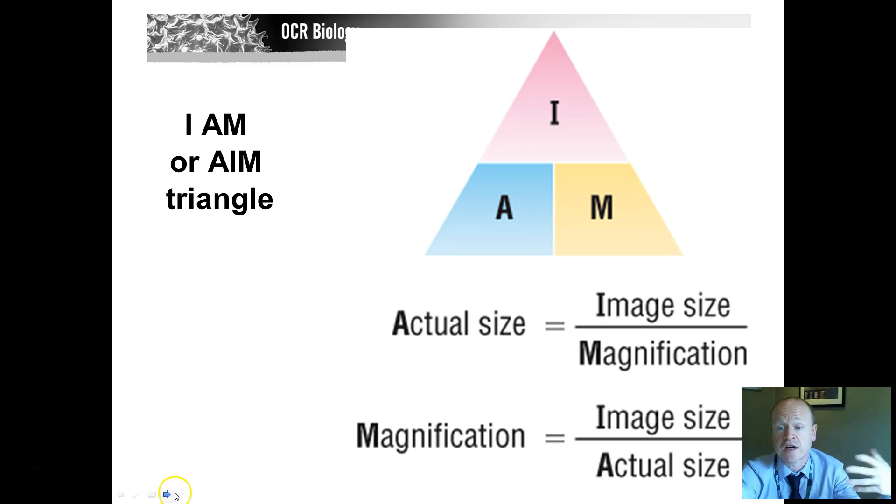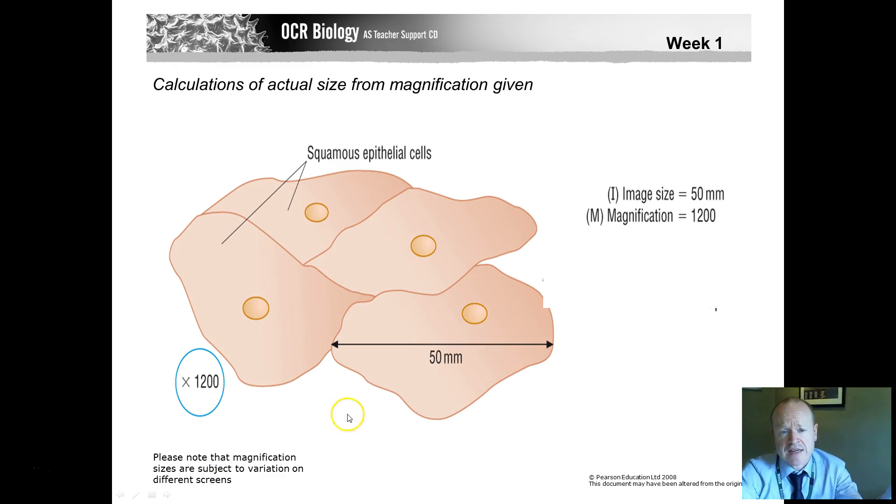Conversions using the I am triangle or A triangle. Here's an example. Note that it might vary depending on how big your screen is. Let's say this number is 50 millimeters. So the image size is 50 millimeters. We said we've magnified it 1,200 times. To calculate the actual size of that cell, we need to be able to use the calculation AIM. So it's 50 divided by 1,200 to give you 0.0416. Remember though, you've got to convert your 50 into usable numbers first. So convert it into micrometers before you do your division.